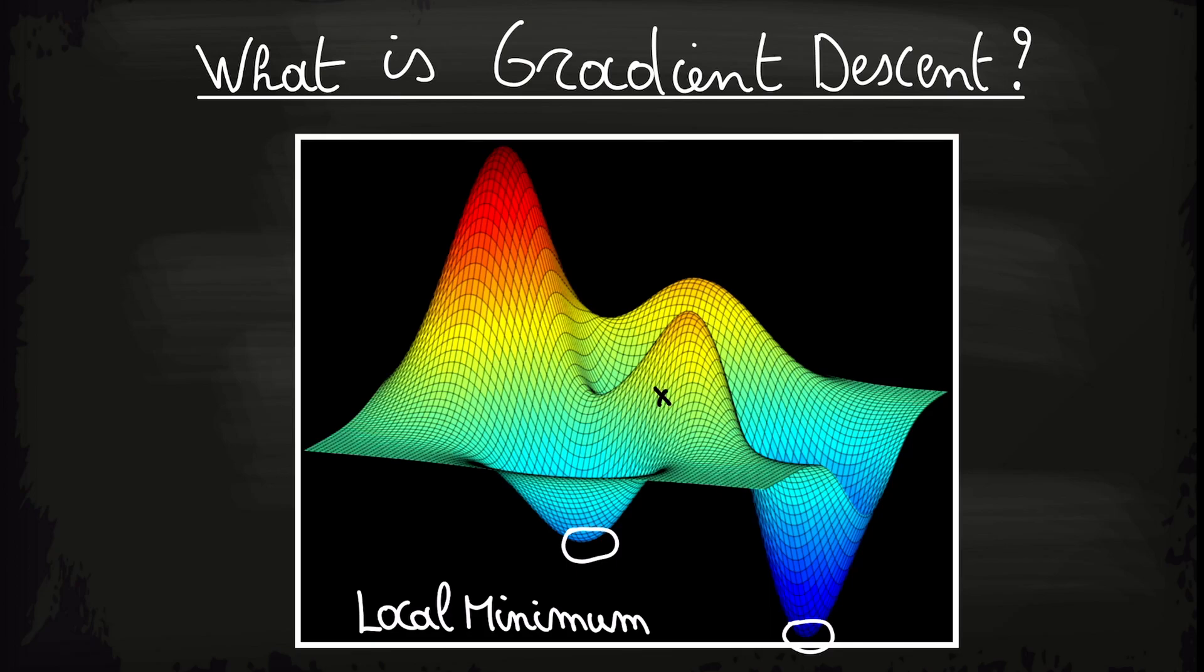Now, what the algorithm basically does is it looks 360 degrees around. So it looks in every direction and then it asks itself if I take a small step in some direction, what direction will give me the steepest decline in the value of j. If we do this, we see that this direction will result in the steepest decline.